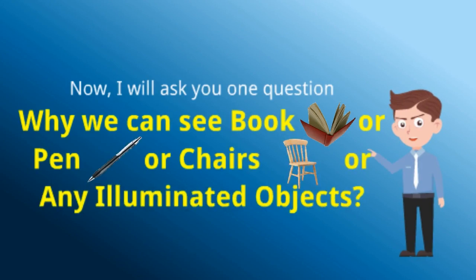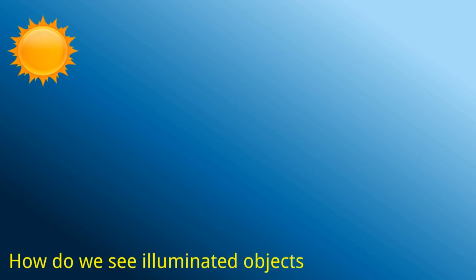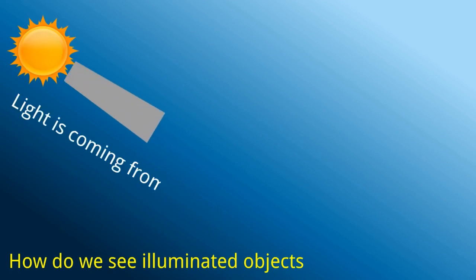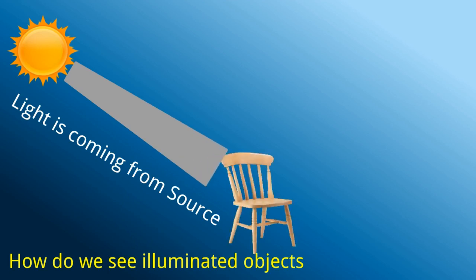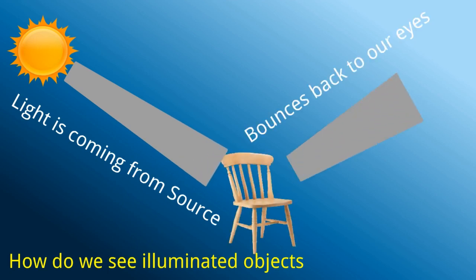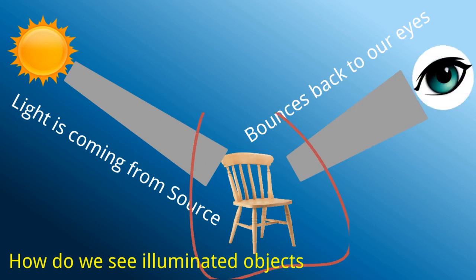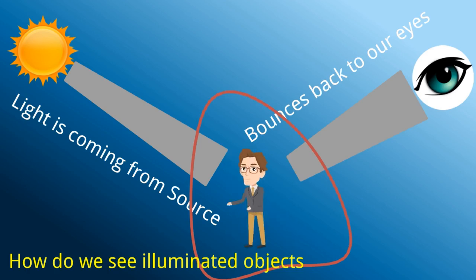It's very simple. Take the Sun as an example — the Sun is a luminous object, so it can produce light. Light comes from the Sun and falls on a chair; from the chair, that light bounces back to our eyes and we can see the chair. In the same way, light falls on a person, bounces back to our eyes, and we can see the person.